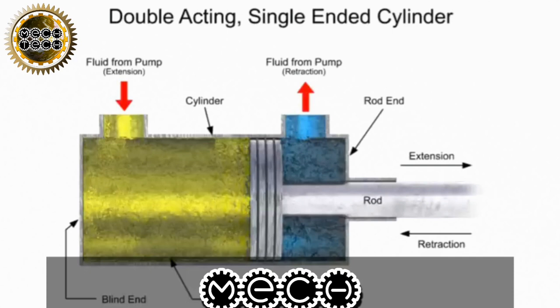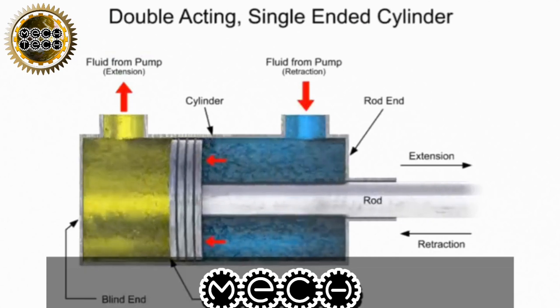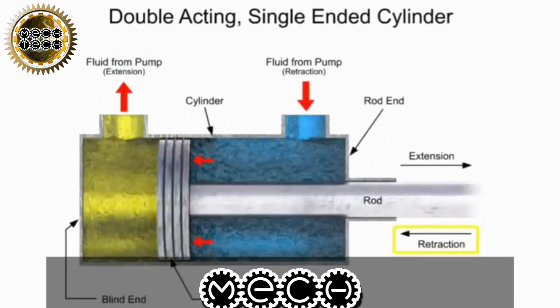When the directional control valve is shifted, it sends fluid into the rod end port, out of the blind end port, and back to the tank. Pressure builds up and generates a force on the other side of the piston, causing the retraction stroke.